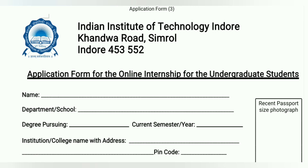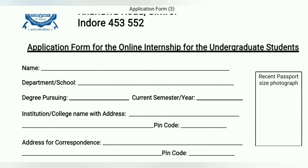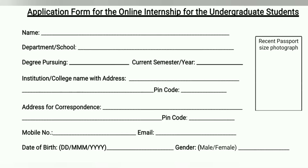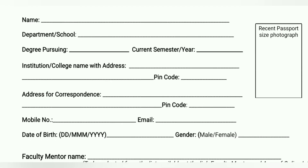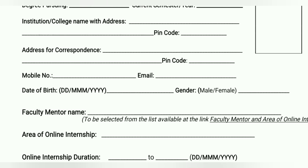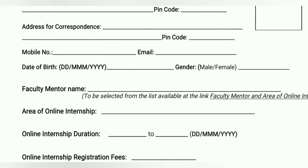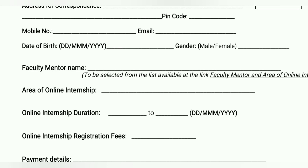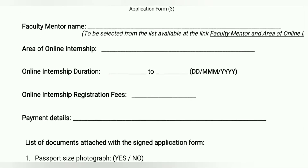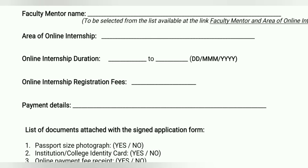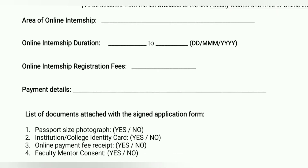This is the form you need to download. Fill in your name, department or school, degree you are pursuing — such as bachelor's in physics, engineering, or chemistry — your institute, pin code, address of correspondence, mobile number, email, date of birth, gender, faculty mentor name (the faculty who has given consent to take you), area of online internship to be discussed with the professor, how many months you will be pursuing this project, registration fee (for four months that should be around ten thousand), and payment details.